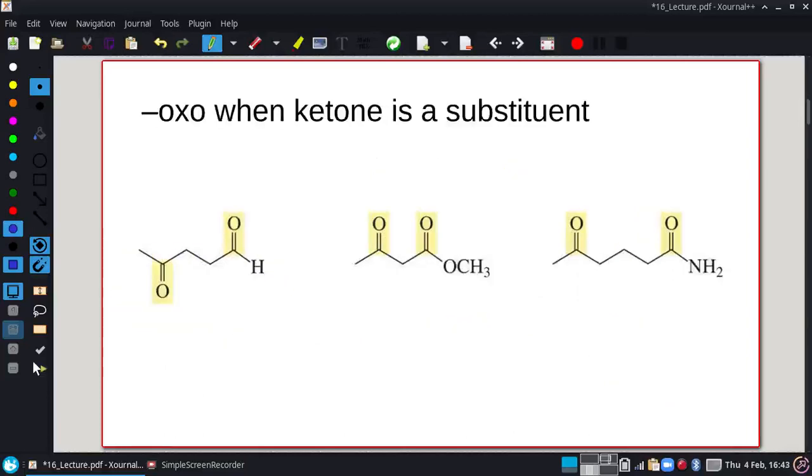All right. When we have more than one. Or when the ketone is a substituent. Either one of those, you're going to use an oxo as a substituent name. So all of my other carbonyl derivatives. So carboxylic acid derivatives do take priority. So they will be one compared to a ketone. And we just number the rest based on that. And that just becomes an oxo substituent.